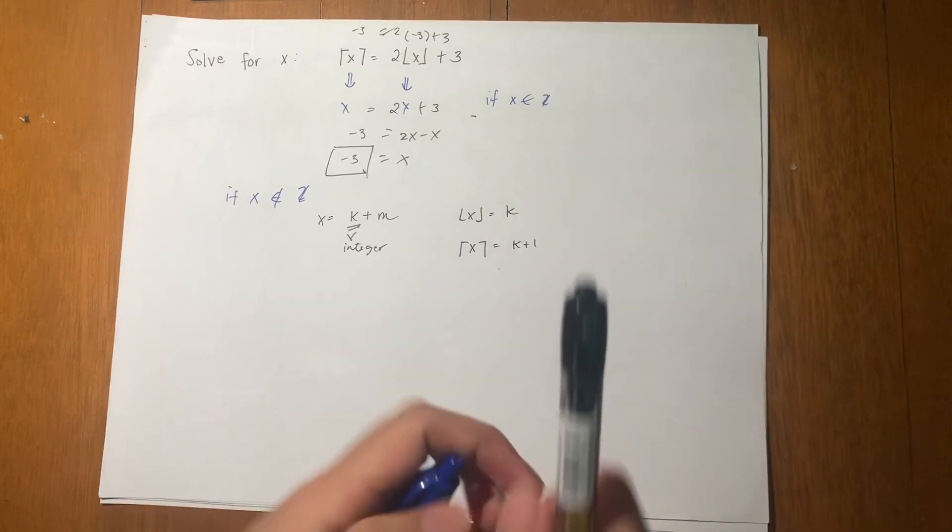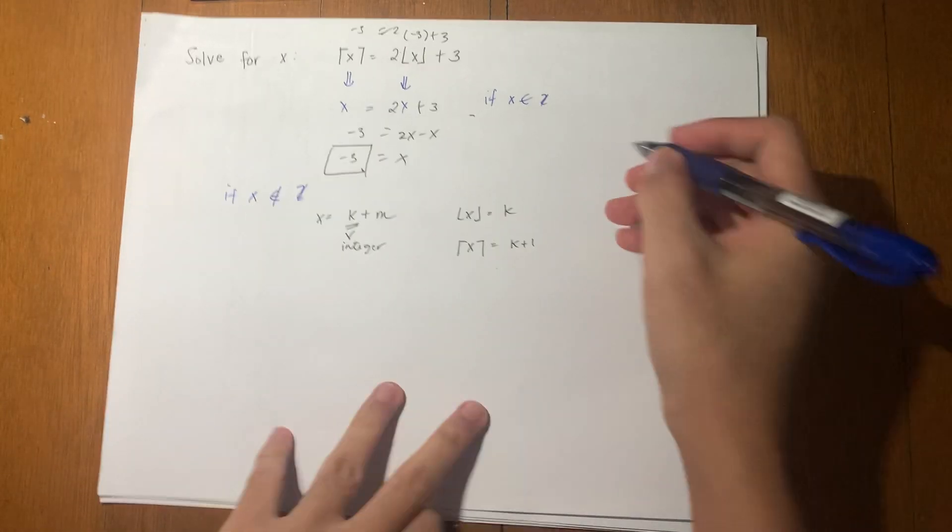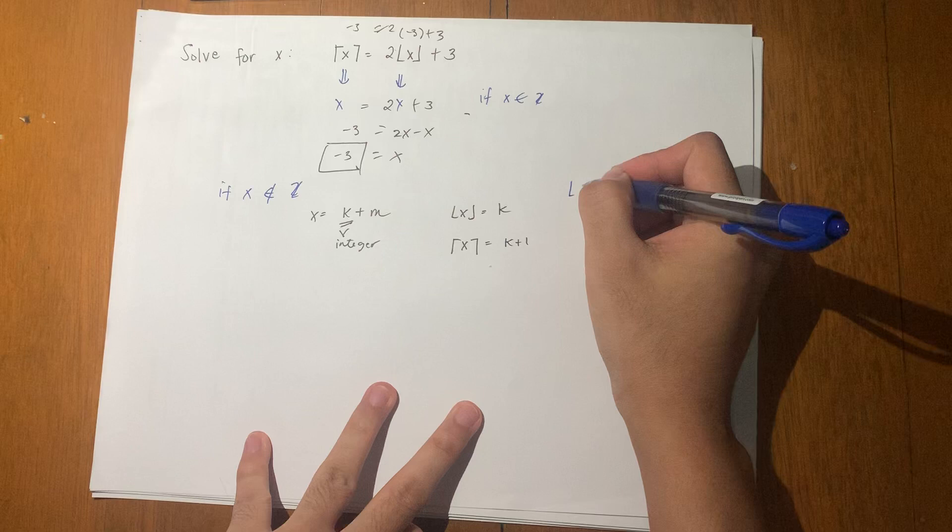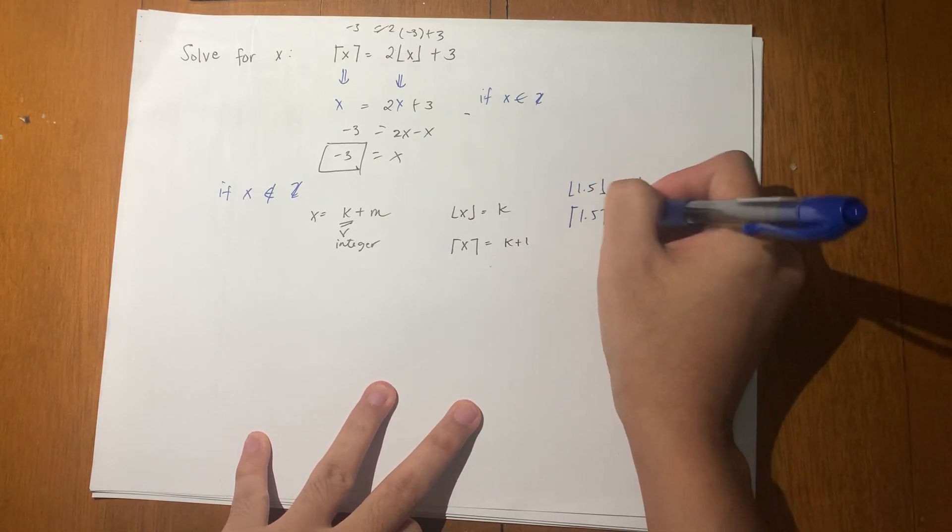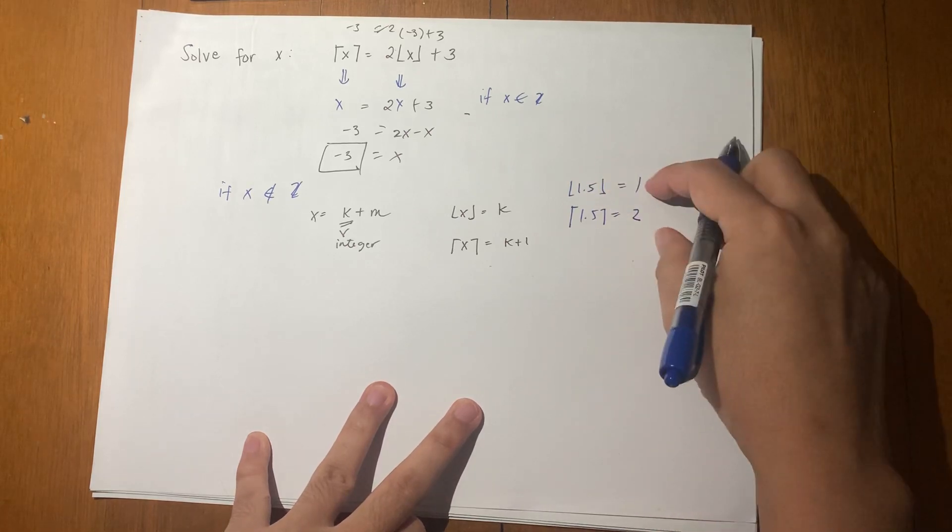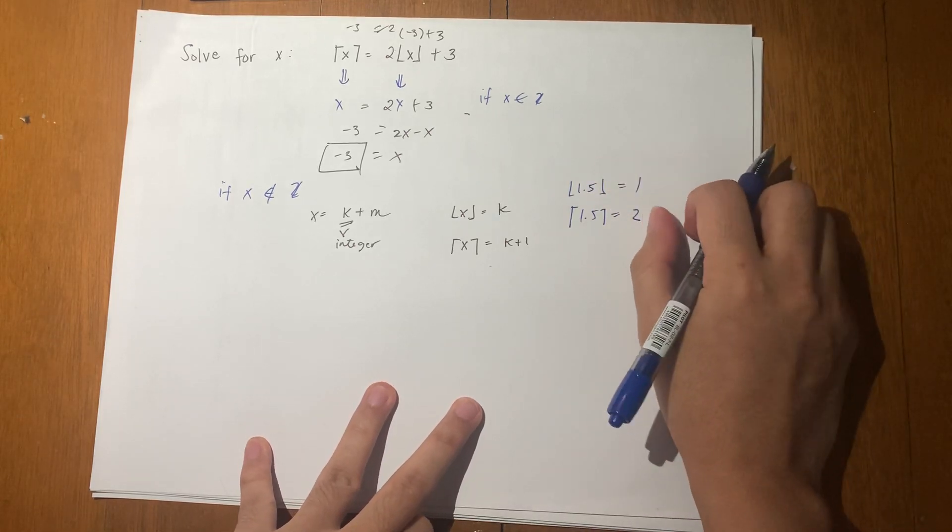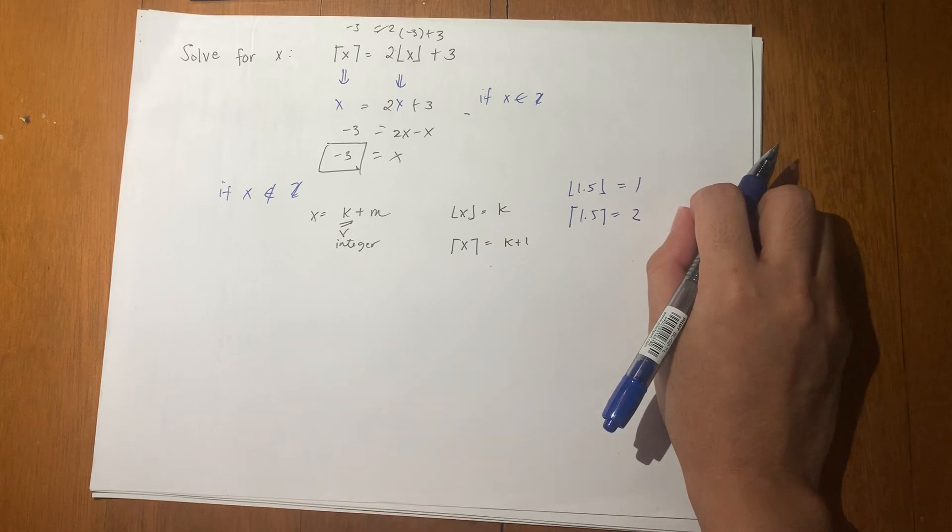For example, if you get the floor of 1.5, that's 1. Then the ceiling of 1.5 is 2. So it's always 1 more for the ceiling.